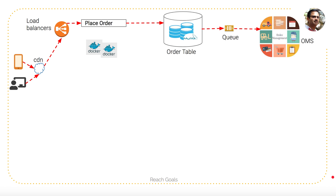The Order Management System performs multiple operations: it helps ship the product and makes sure notifications are sent to the customer. Whenever an order is created, it goes to the queue and then to the Order Management System. OMS ships the product, and that's where the sale is created. We need that information in order to generate the BSR data.